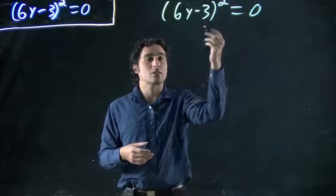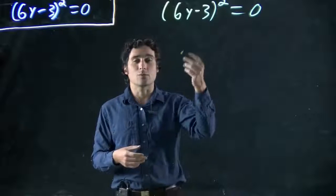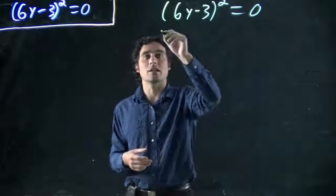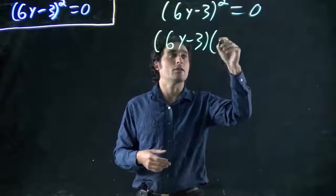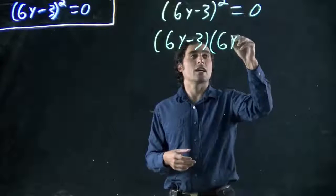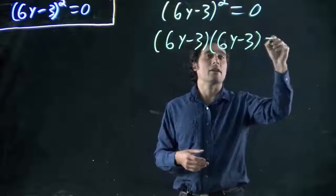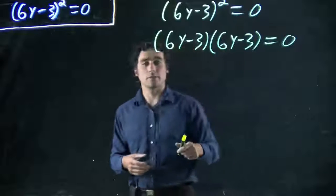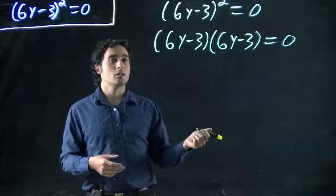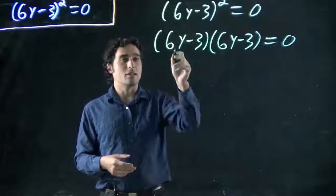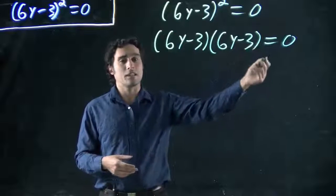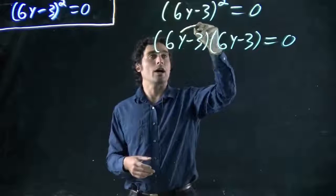So 6y minus 3 squared is 6y minus 3 times 6y minus 3. So at least I can write this out, maybe in a way that I can understand it better, or at least see it a little bit better. Remember, that's all equal to zero still.